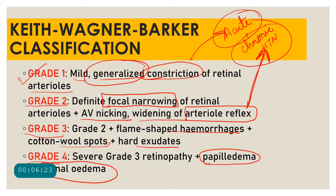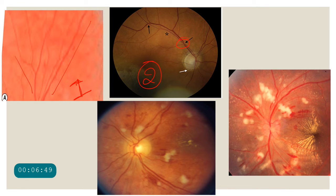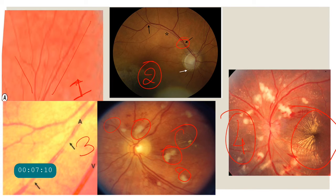Generalized constriction was a response to acute changes, while widening of the arterial reflex was seen with atherosclerosis or chronic hypertension, which is why Keith Wagner Barker's classification includes both. Looking at examples: grade 1 shows generalized narrowing; grade 2 shows AV nicking, where the thickened, atherosclerosed artery presses on a vein; grade 3 shows cotton wool spots, exudates, and hemorrhages; and grade 4 shows disc edema and retinal edema.